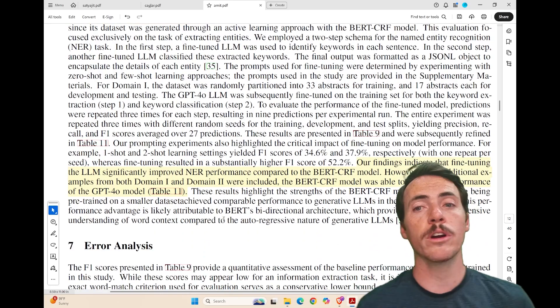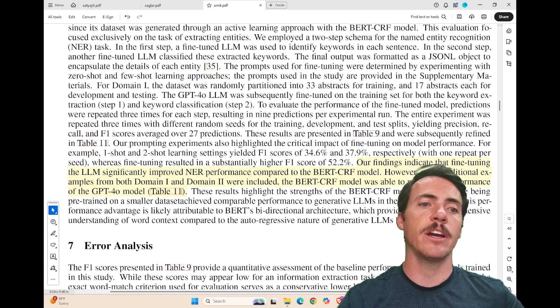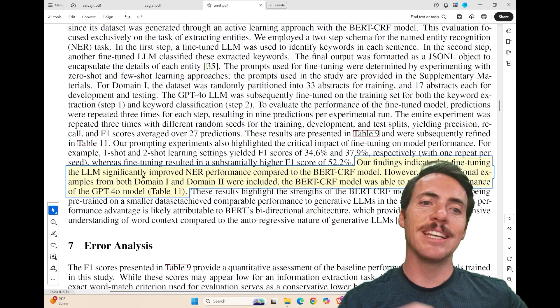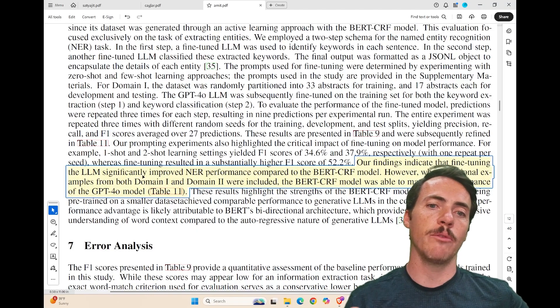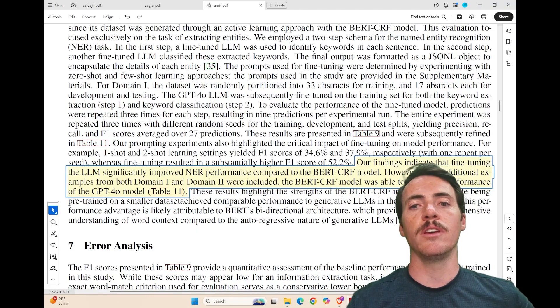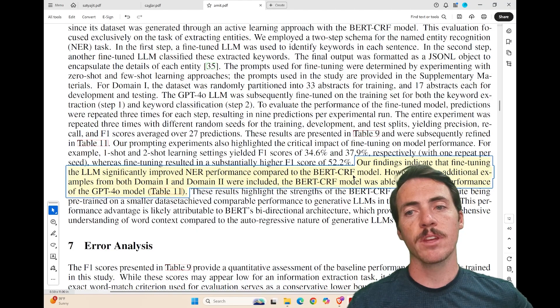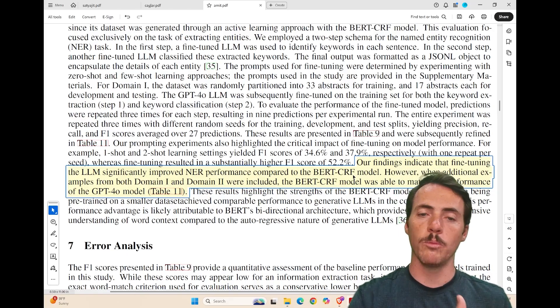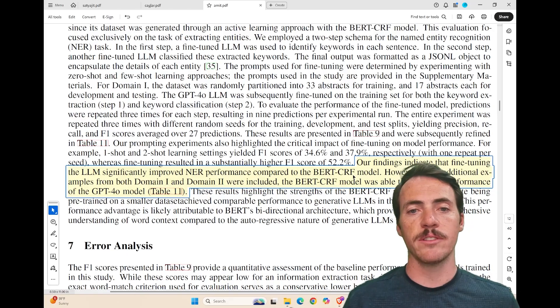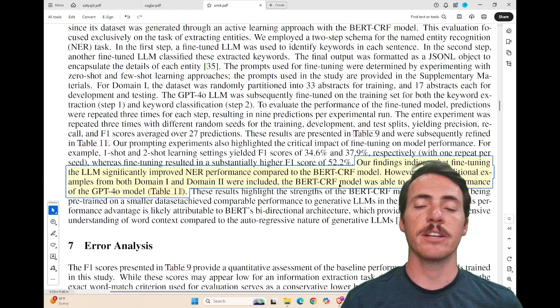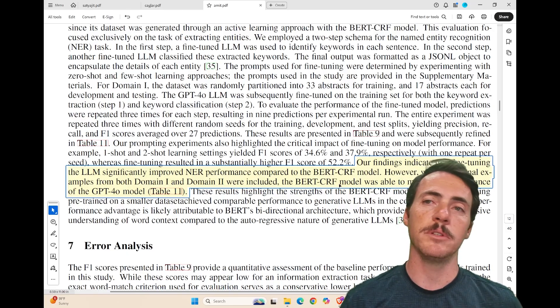The second thing they wanted to test was whether or not you needed to use a material science-specific language model or whether you could get away with something general use, like ChatGPT. And basically, what they find is that both can work. Their findings indicate that fine-tuning of a language model significantly improved the named entity recognition compared to the material science domain model BERT. But they point out that if you add information from domain one and domain two, so you're adding additional examples, that the material science domain BERT CRF model can actually match the performance of ChatGPT-4.0.